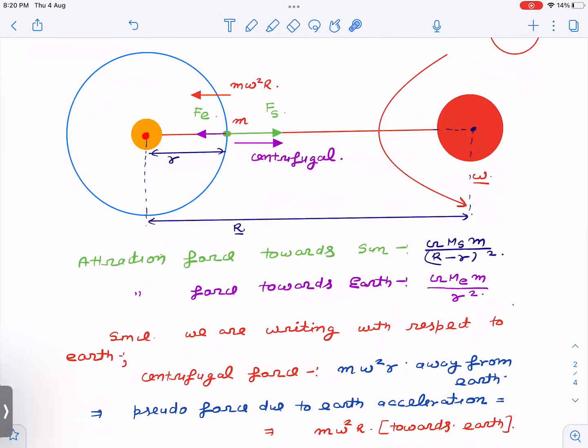Now pseudo force due to Earth's acceleration. Earth is also rotating, so the observer also has linear acceleration, which is ω² R towards the center. That will also act on the particle in the form of pseudo force. Since the direction of acceleration is centripetal, this acceleration will act on this in the opposite direction, M ω² R. Here, R is the radius of Earth's rotation around the sun.